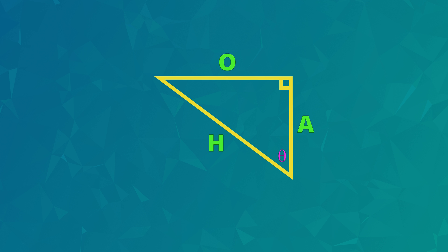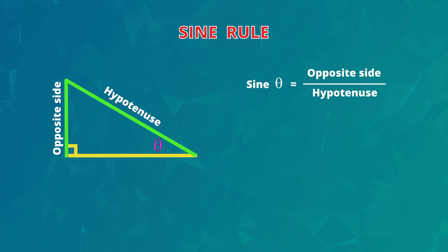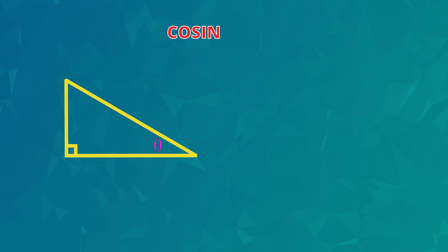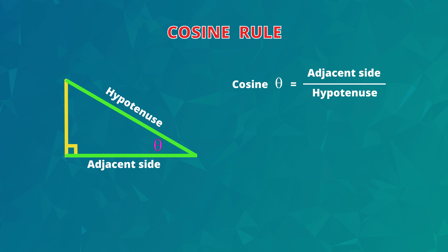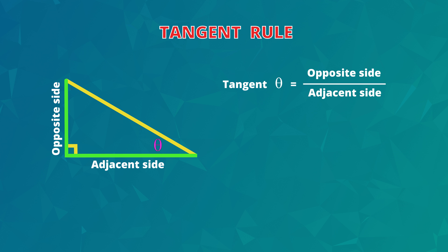Now we're ready to see the three trigonometry rules — they are ratios that compare the sizes of sides. The first rule is the sine rule: sine theta equals O divided by H, that is the opposite side divided by the hypotenuse. The second rule is the cosine rule: cos theta equals A divided by H, that is the adjacent side divided by the hypotenuse. The third rule is the tangent rule: tan theta equals O divided by A, that is the opposite side divided by the adjacent side.